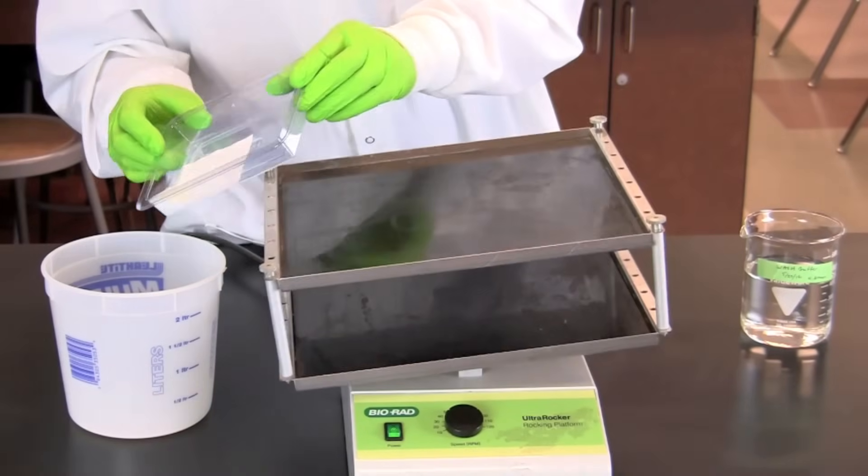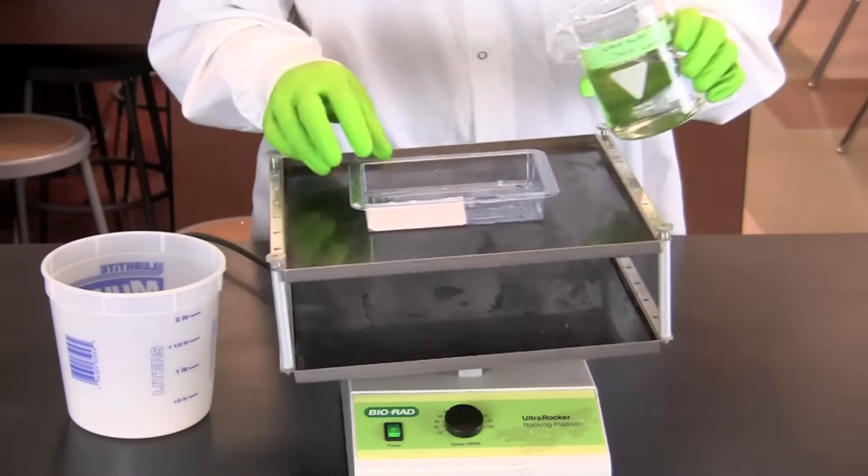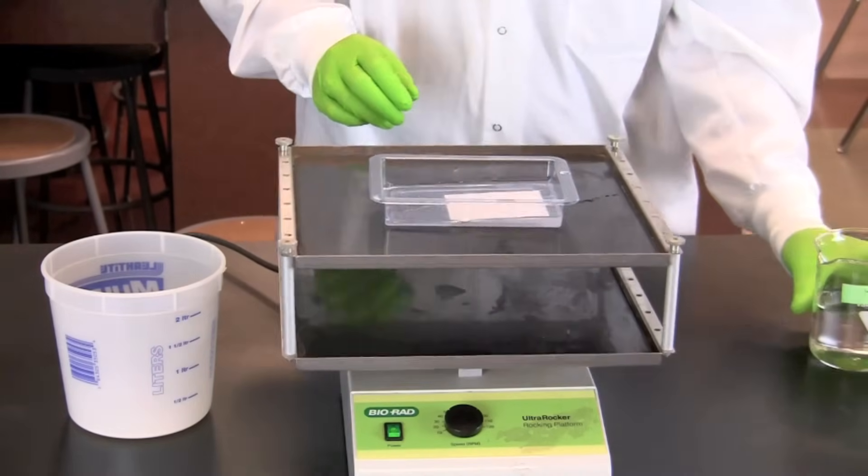Pour off the primary antibody. Rinse the membrane quickly in 50 milliliters of wash buffer and then discard the wash buffer.